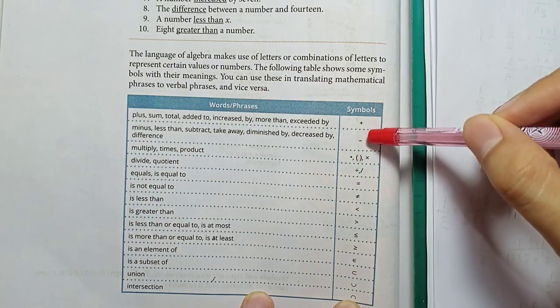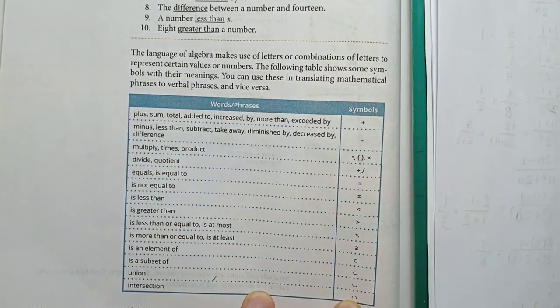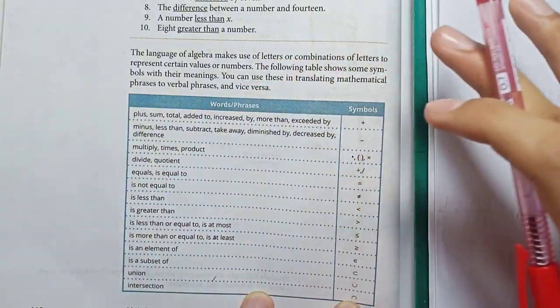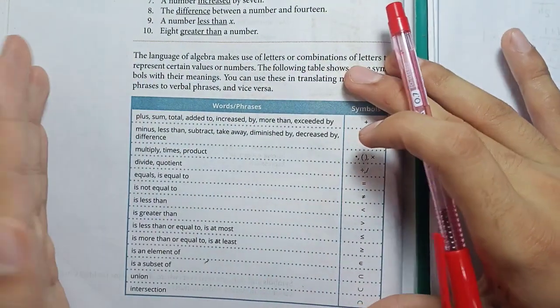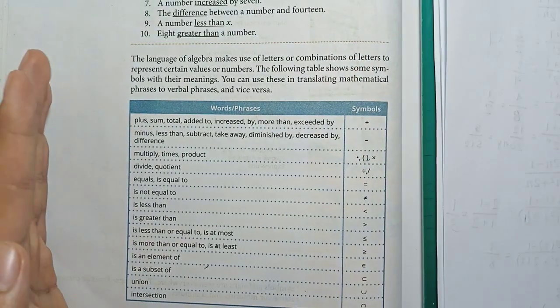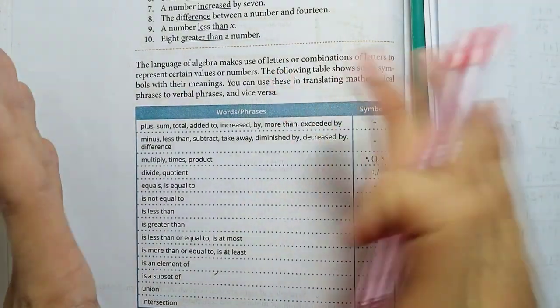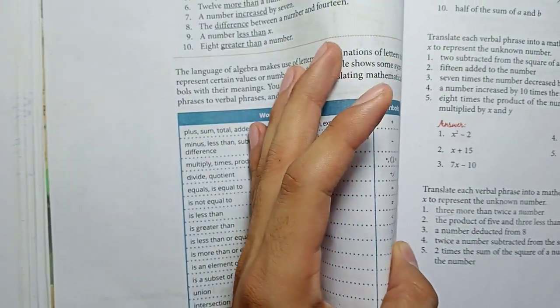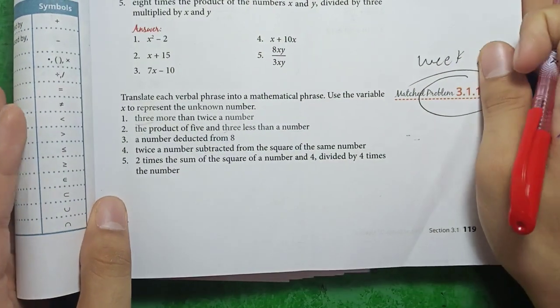So in here, we have a table that can be useful in this lesson. This is the word phrases and the symbol that represent each of these. So plus, sum, total, added to, increase by, more than, exceeded by simply means addition. You can pause the video so that you can take a good look of this table because we're going to use this one as our guide in answering this problem.